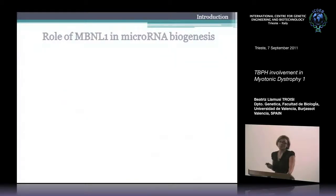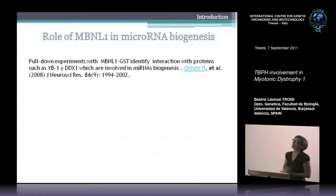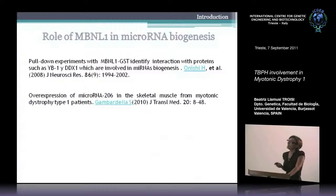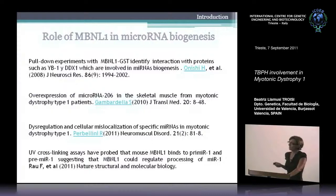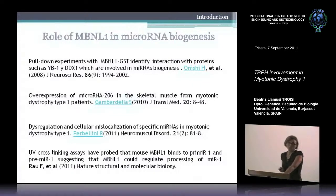Muscle-blind, although mainly known for its role as a splicing regulator, also has a role in microRNA biogenesis. Multiple studies have shown this relationship — it has been reported to interact with proteins related to microRNA biogenesis. Some microRNAs have been found altered in patients, not only in levels but also in localization, like microRNA-1. Most recently, it has been shown that muscle-blind 1 directly interacts with MIR1 and may be involved in the processing of this miRNA.